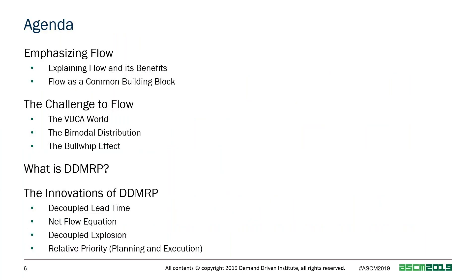So what are we going to talk about today? We're going to talk about flow and flow becoming our main objective, then point out some challenges to flow. We're going to talk about what DDMRP — Demand-Driven Material Requirements Planning — is, and then go through the four main innovations of Demand-Driven MRP. You will find they are not a 180-degree change in our thinking, but they are significant and make a huge impact, even though the change is relatively small and elegant.